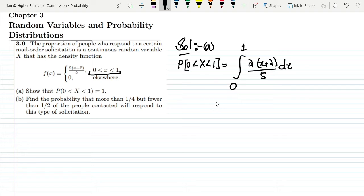In solving it, these two are constants, so 2/5 will be here. This (x + 2) has power 1, so this would be (x + 2)² divided by 2. This is the integration formula: if we have some power, the power will be added by 1 and similar powers will be in the denominator, evaluated from 0 to 1.